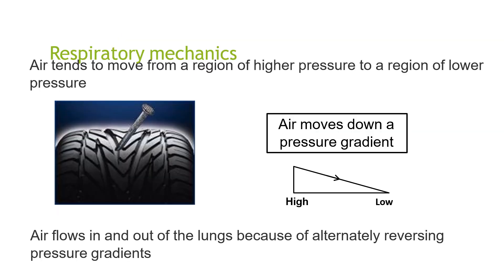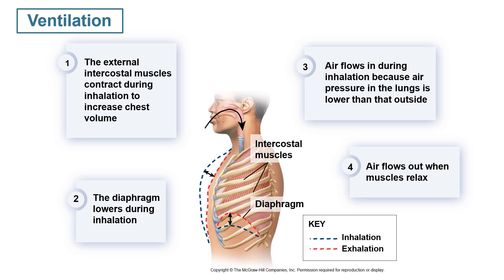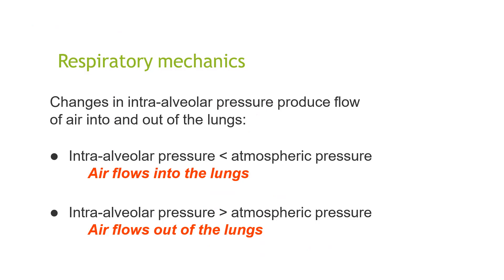Air tends to move from a region of high pressure to a region of low pressure, and air flows in and out of the lungs because of alternately reversing pressure gradients. The external intercostal muscles contract during inhalation to increase chest volume, and the diaphragm lowers during inhalation. Air flows in during inhalation because air pressure in the lungs is lower than outside, and air flows out when the muscles relax. Intra-alveolar pressure less than atmospheric pressure causes air to flow into the lungs; intra-alveolar pressure greater than atmospheric pressure causes air to flow out.